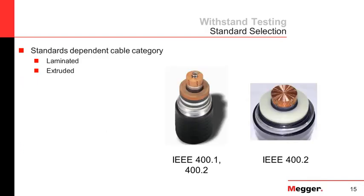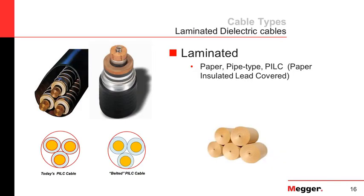There is some confusion about which standard to use for DC withstand testing, and this depends on cable category. There are two main categories: laminated cables and extruded type cables. Laminated cables are your paper cables, pipe type cables, and PILC cables — paper-insulated lead-covered cables — where the insulation is made of paper impregnated with oil for dielectric strength. Extruded cables are your EPR and XLPE cables.